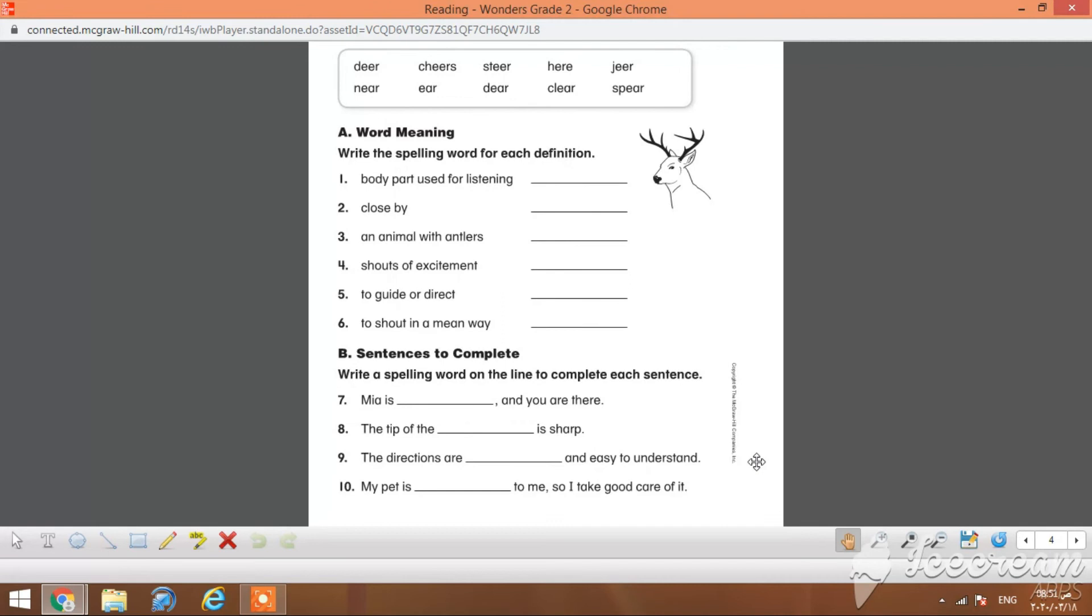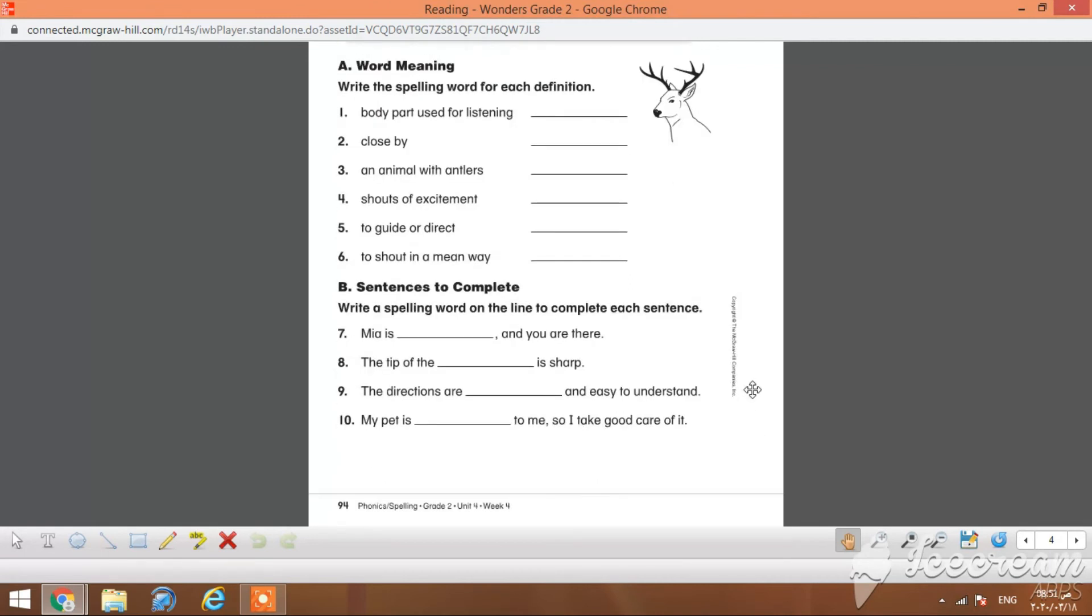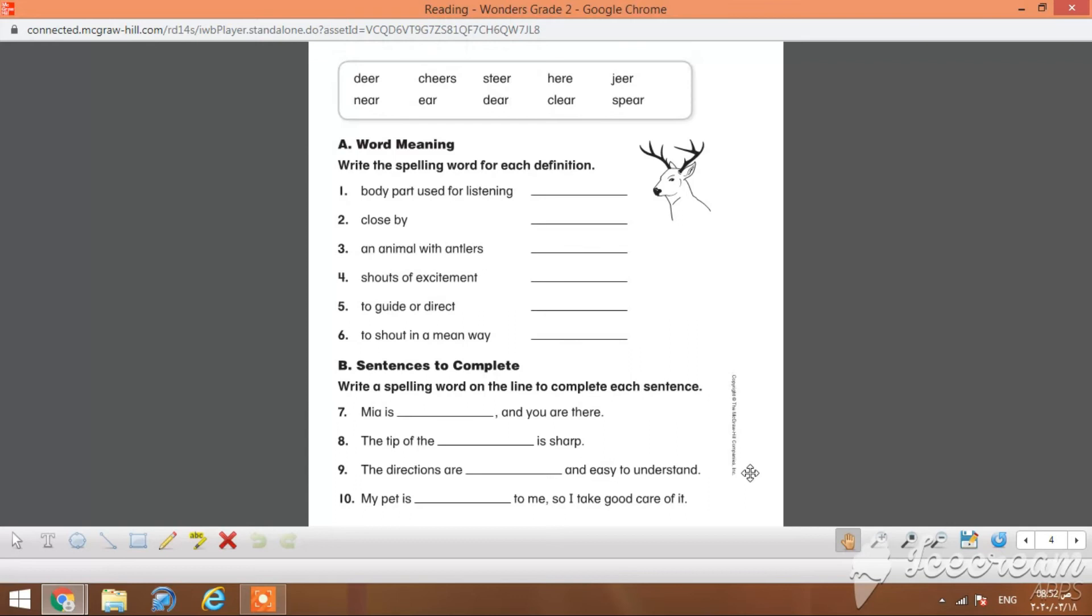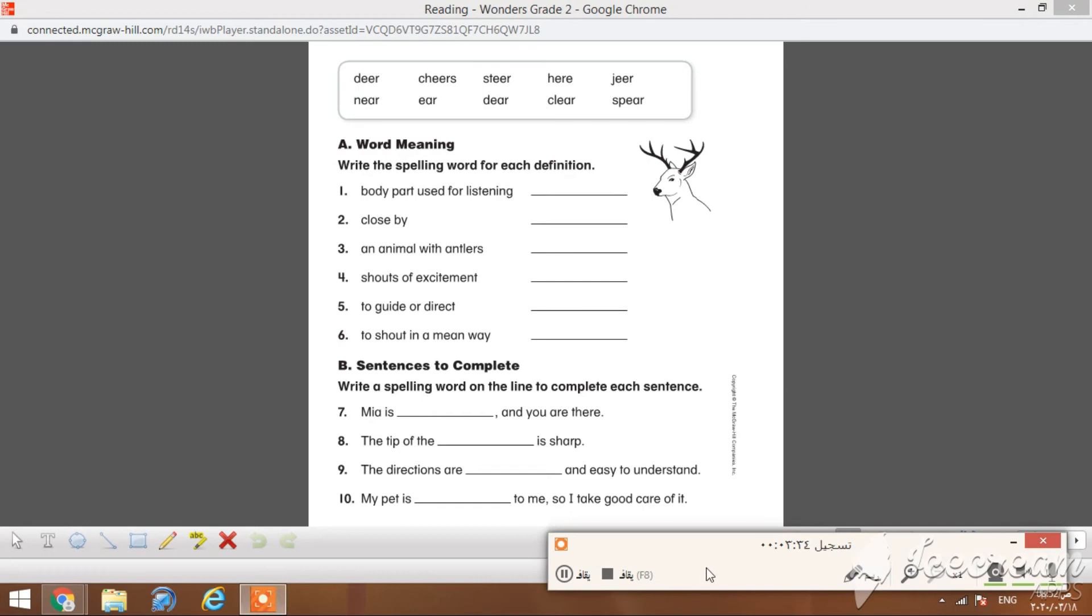Next on, we'll move on to page 94. Another practice with the same list of words, but in a different way—here, contextually or within sentences to fill in. Write the spelling words for each definition.